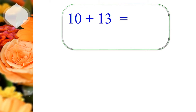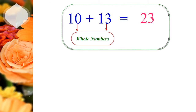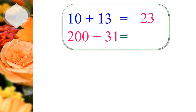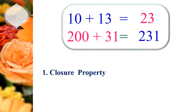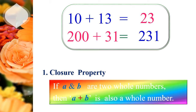Let us see another example. 10 plus 13 equals 23. Here, 10 and 13 are whole numbers and the result, 23, is also a whole number. Next, 200 plus 31 equals 231. Here, 231 is also a whole number. So we learn from this: when we add two whole numbers, we always get a sum that is also a whole number. We define closure property as: if A and B are two whole numbers, then A plus B is also a whole number.